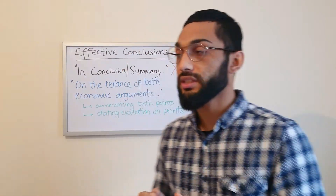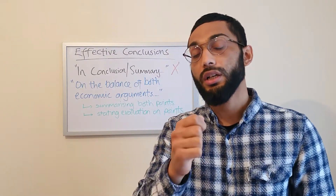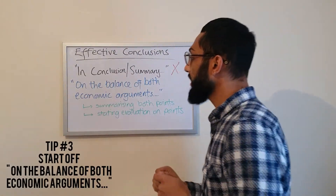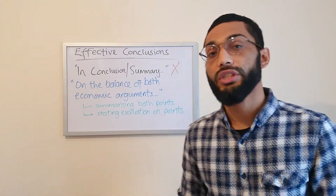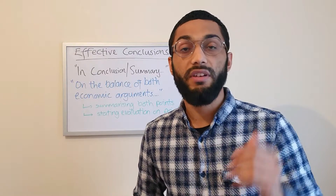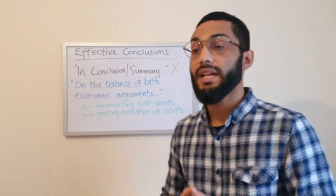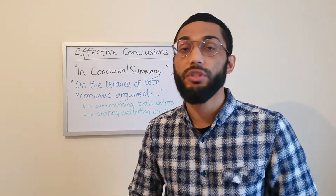In the conclusion, you have to summarise both your points that you have developed — your for versus against the argument. One of the best ways to do this is to use the following words as the conclusion starter: something like 'On the balance of both economic arguments.' This is a really good way to start your conclusion, showing the examiner that after the for versus against arguments you've developed, you're now going to take a balanced perspective and then make a judgement.